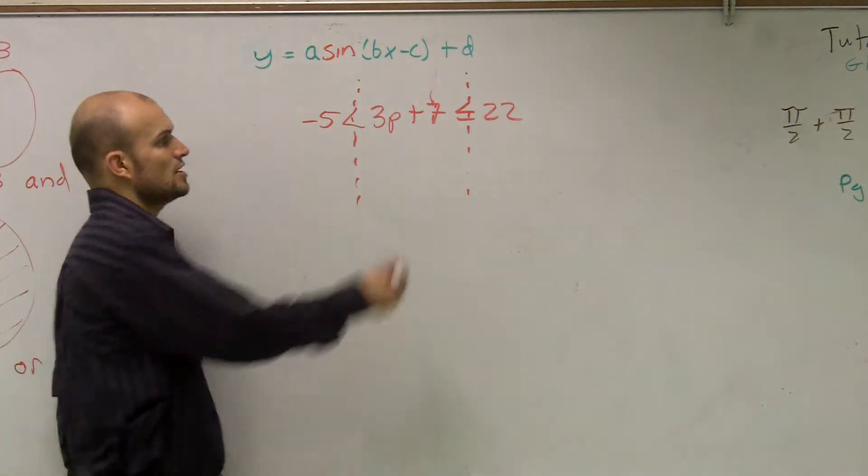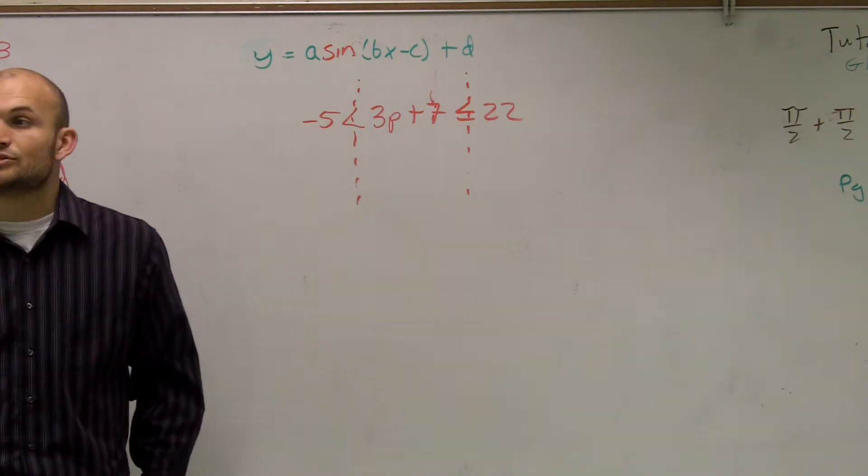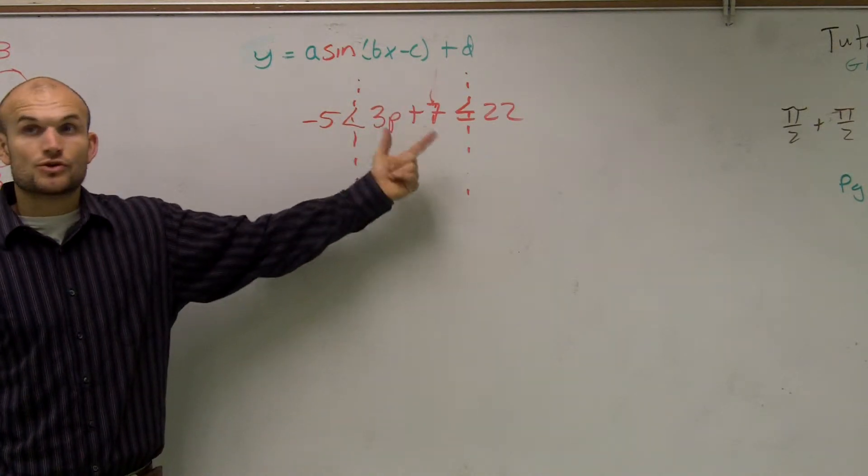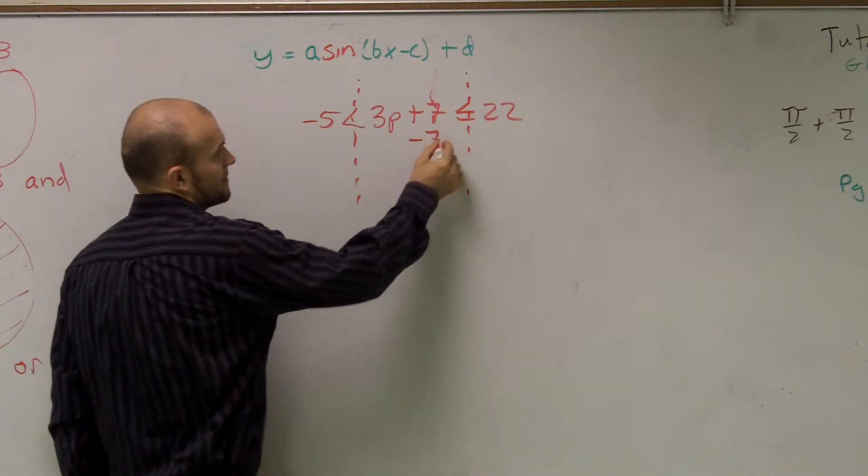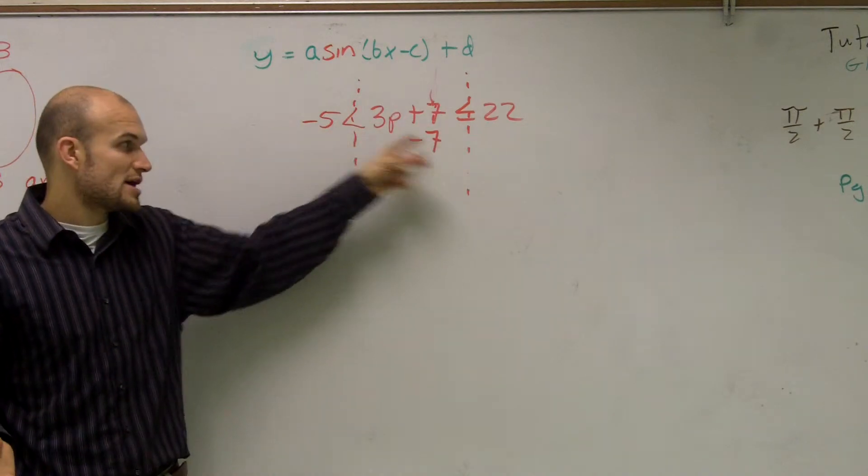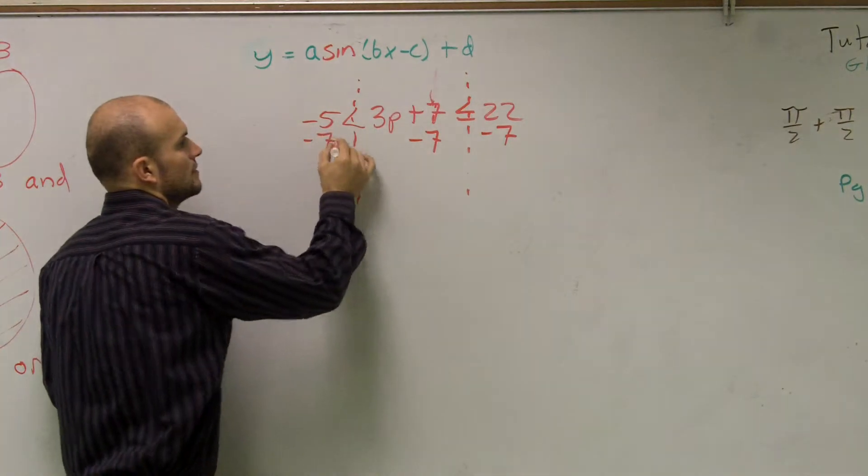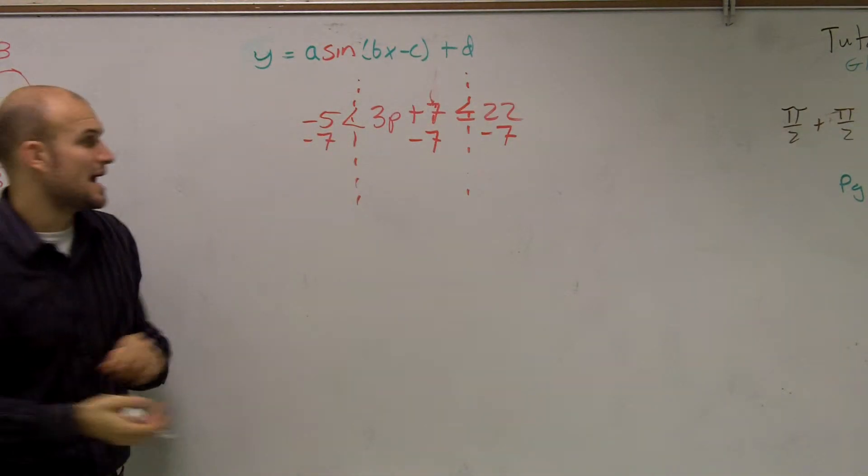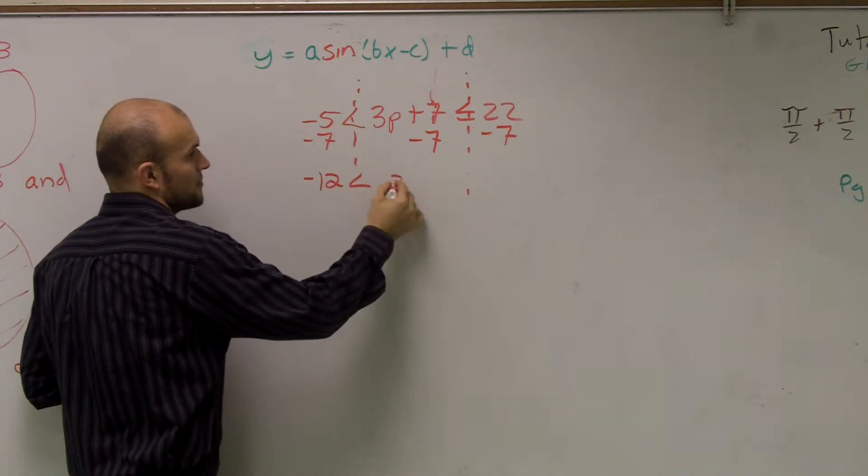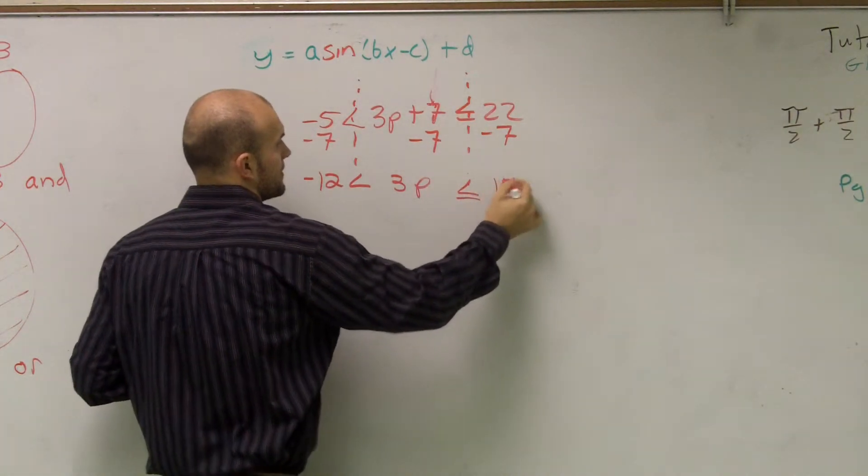You guys see what I do right now? So if I need to get rid of my P, I need to get my P by itself. So I need to undo what's happening to my P. My P is being multiplied by three and added by seven. So to undo addition, I can subtract a seven. Right? But now we have a left and a right. So I need to subtract seven from both of those. Does everybody see that, what I did? So now I have negative 12 is less than 3P, which is less than or equal to 15.